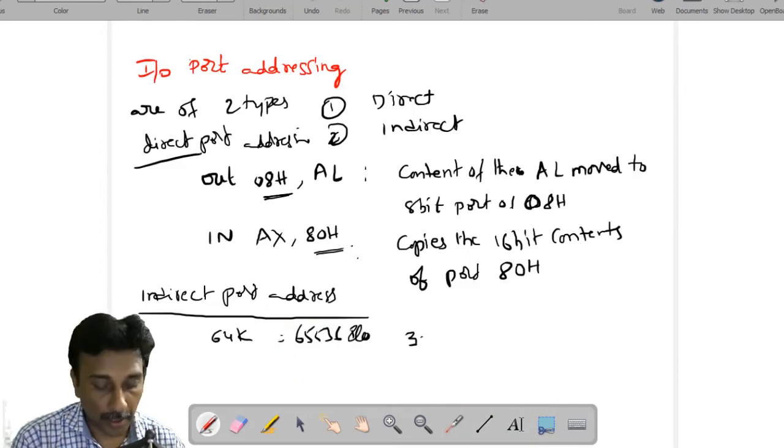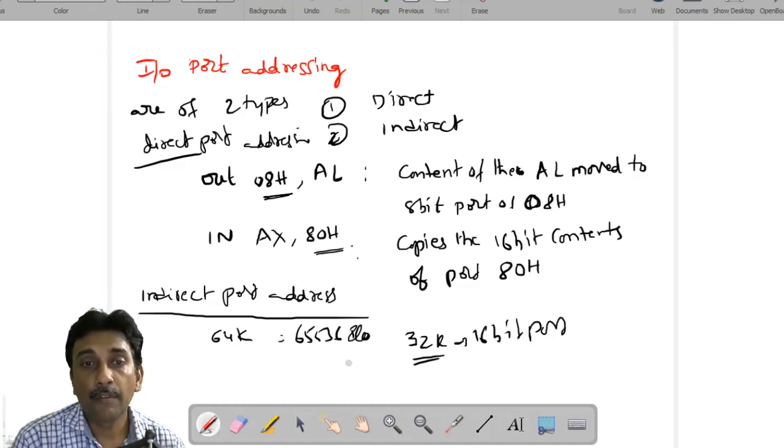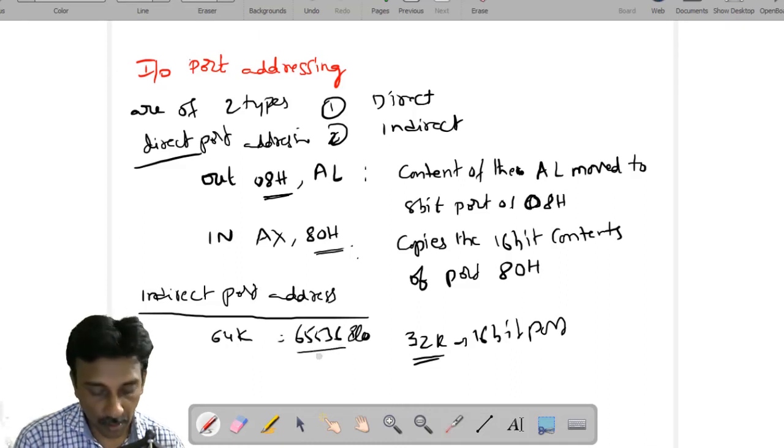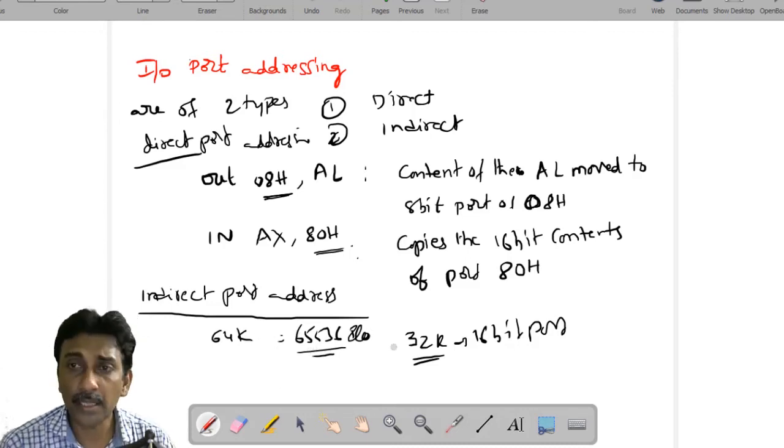Or you can use 32K with 16-bit ports. If you want to use the 16-bit ports, you can use 32K. If you want to use 8-bit ports, you can use the 65,536 ports. So there may be a chance to allow those many ports in memory mapped I/O via the indirect port addressing.